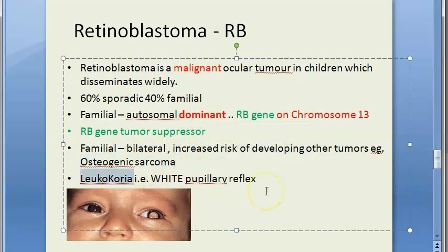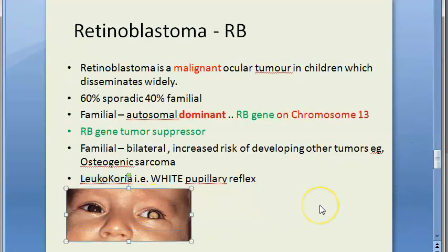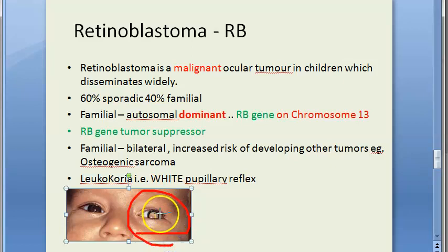Regarding clinical features, the person will have leukocoria — the pupillary reflex will be white. You can see in this child how there is a white pupillary reflex; the inside of the eye appears white.